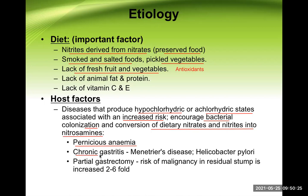Another condition is chronic gastritis. There are different types — type A and type B — both associated with hypochlorhydria. Another is Ménétrier's disease, which also involves decreased hydrochloric acid secretion.